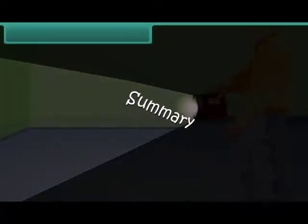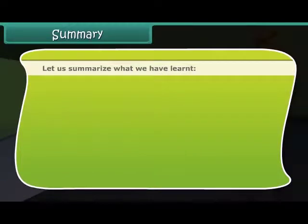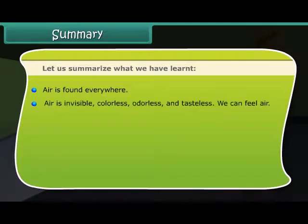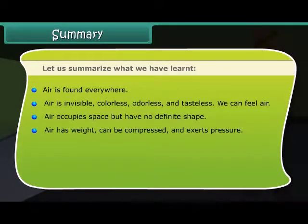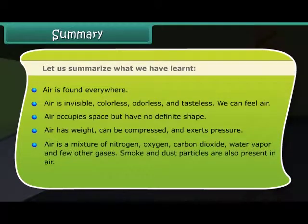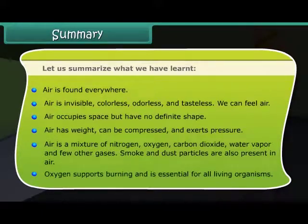Summary. Let us summarize what we have learned. Air is found everywhere. Air is invisible, colorless, odorless, and tasteless. We can feel air. Air occupies space but has no definite shape. Air has weight, can be compressed, and exerts pressure. Air is a mixture of nitrogen, oxygen, carbon dioxide, water vapor, and a few other gases. Smoke and dust particles are also present in air. Oxygen supports burning and is essential for all living organisms.